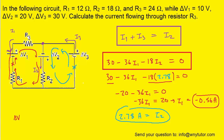We can now conclude the problem. The question asked for the current flowing through resistor R3, which corresponds to I1 in our diagram. We just found that value, and we simply drop the negative sign to report the magnitude: the current through R3 is 0.56 amps. This is the correct answer.